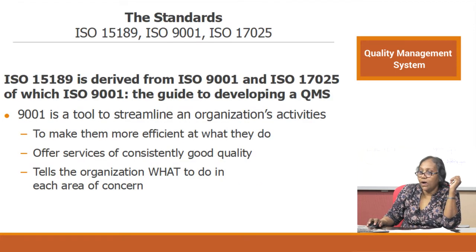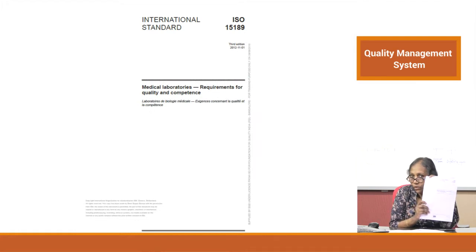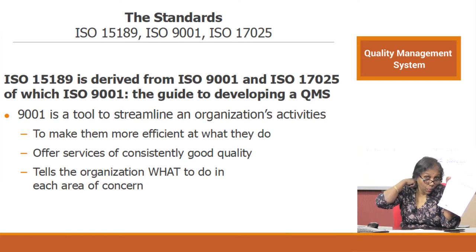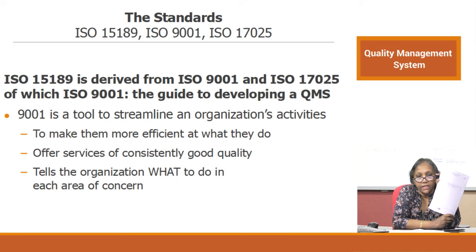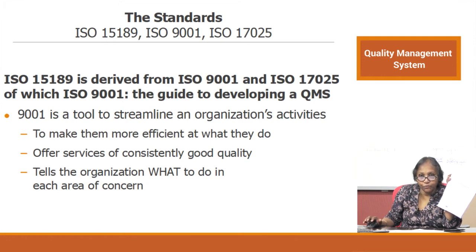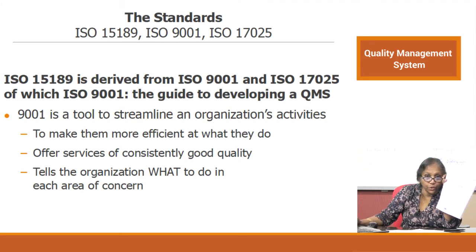Let us look at the standards. There are 3 ISO standards; our main standard is 15189, which we already talked about. The other two are ISO 9001 and ISO 17025. 15189 is derived from ISO 9001 and 17025. ISO 9001 is the guide to develop a QMS — a tool to streamline organizational activities, make them more efficient, offer services of consistently good quality, and tells the organization what to do in each area of concern.